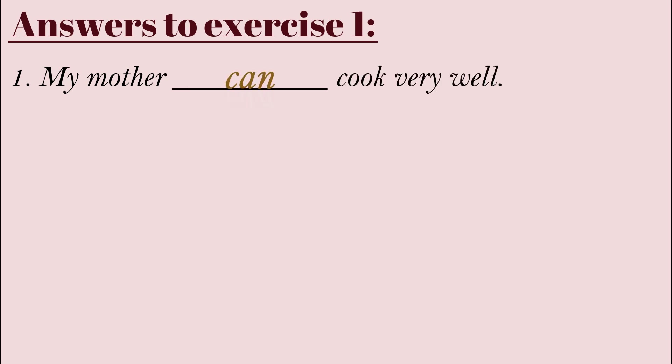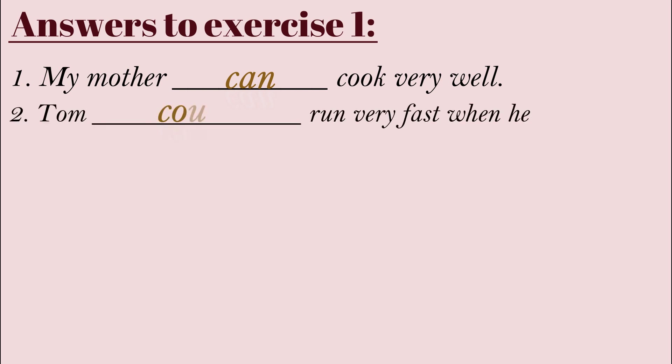Number two: 'Tom could run very fast when he was young' — he had the ability to run very fast as a young person; we understand he is no longer young. Number three: